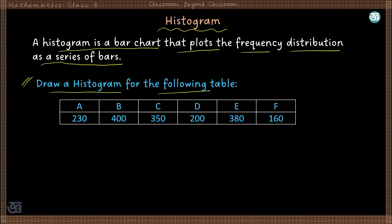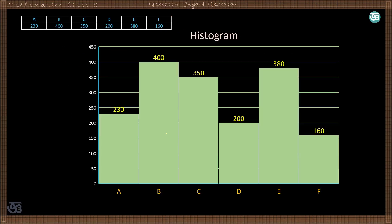Let us draw a histogram for the following table. Say category A has a frequency of 230, B has 400, C has 350, and so on. In the histogram, the height of each rectangular bar represents the frequency — so this height for B represents 400. There is no gap between the successive rectangular bars. That is the only difference between a bar graph and a histogram: the histogram is continuous with no space between two rectangles.